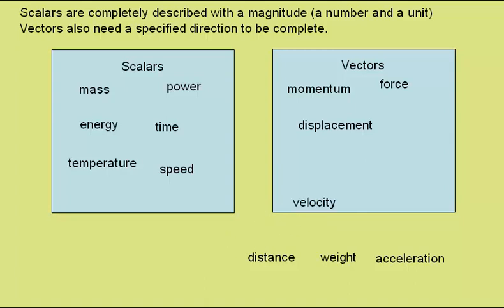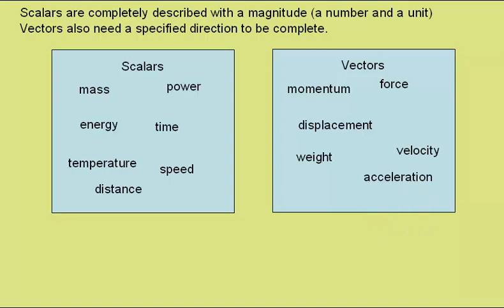Velocity, I've already mentioned, is a vector. That's like speed but with direction. Distance must be a scalar, as displacement is the equivalent vector. Weight is a force, and is therefore a vector. And for acceleration, direction is important, and so acceleration is a vector.